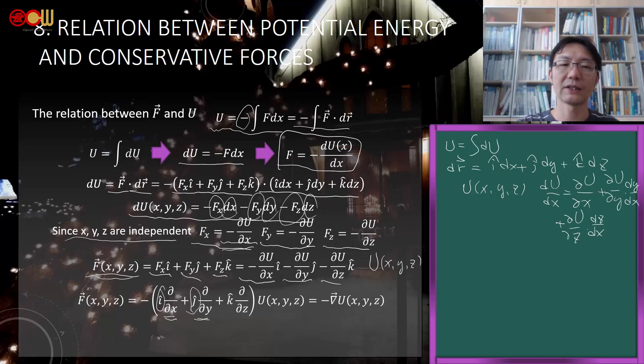We reorganize by writing the unit vectors i, j, k in front, and putting the partial derivative operators on the right so they can act on the function. This gives F⃗ = -(i ∂/∂x + j ∂/∂y + k ∂/∂z)U. This operator is defined as the gradient ∇⃗ = i ∂/∂x + j ∂/∂y + k ∂/∂z. For 1D it's simply F = -dU/dx, but for 3D each direction has a gradient forming a vector, so force becomes a vector with three components.